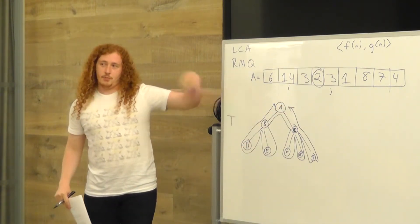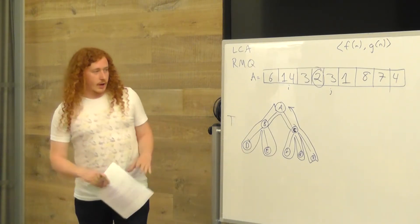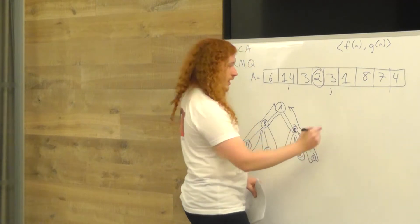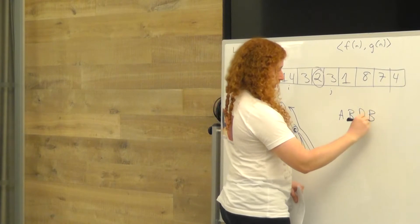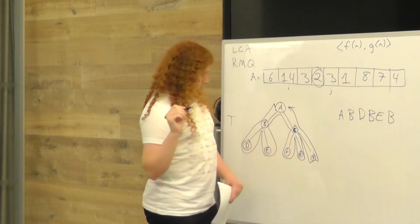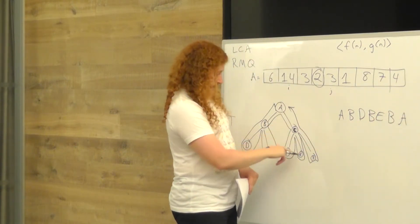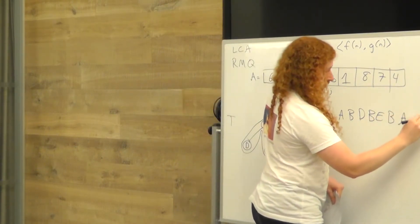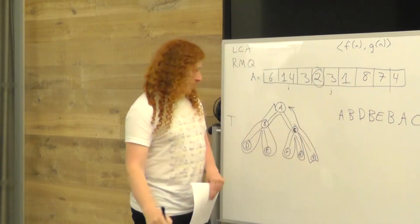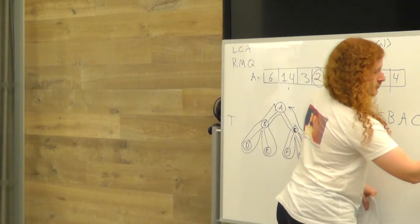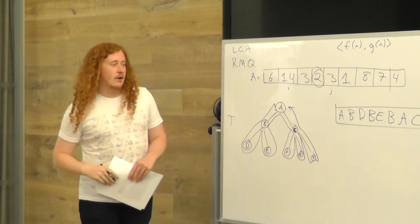Every internal node is going to appear twice — actually multiple times — and every leaf node is going to appear once. So we write it out: A, B, D, B, E, B, then A again, C, F, C, G, C, H. I've made an array out of my tree. Now I can do RMQ on it. What we're going to do here is, now that we've got this Euler Tour, we're going to take our two query nodes — let's say we're trying to solve LCA of B and F.